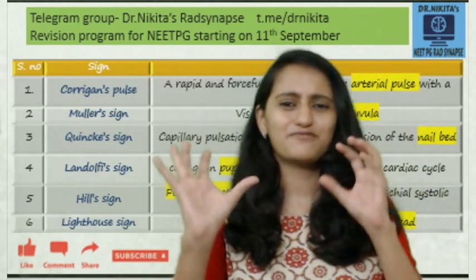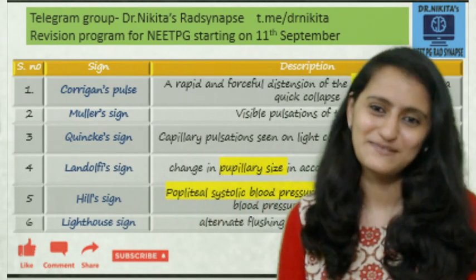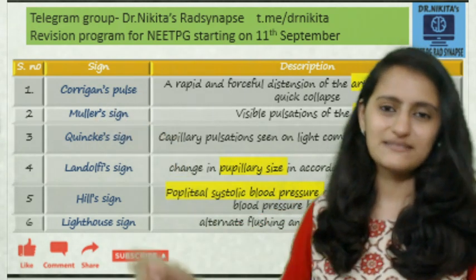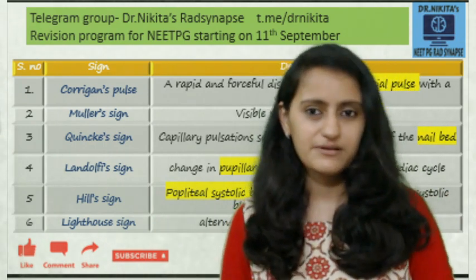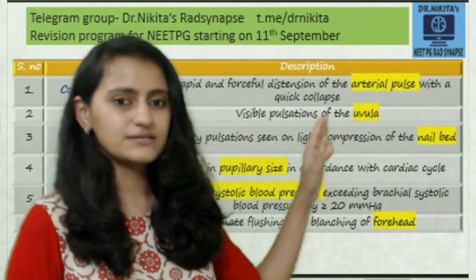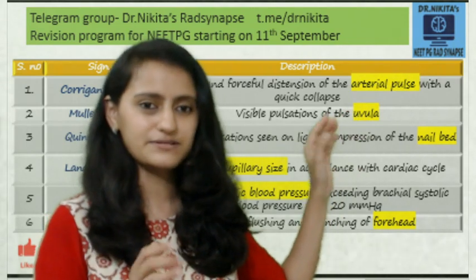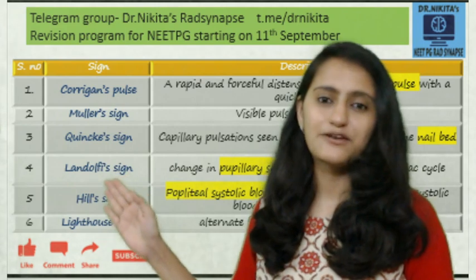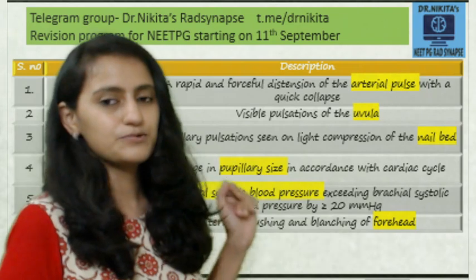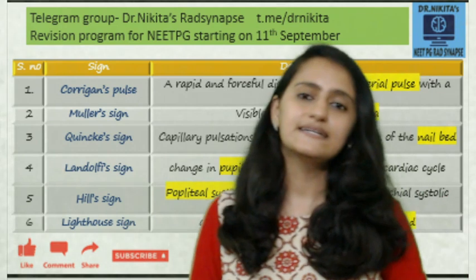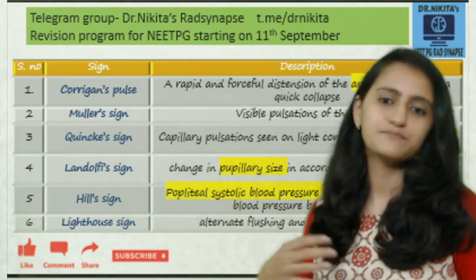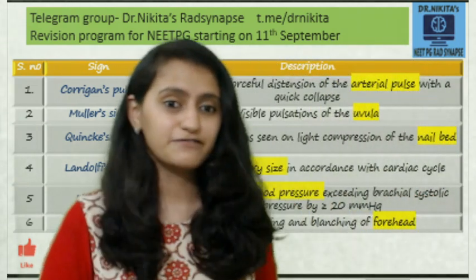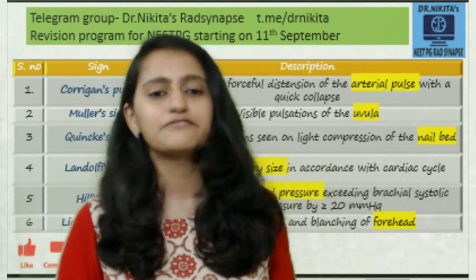That was part one — out of 12 to 15 signs, we have seen 6. Quick summary: Corrigan's sign is the dancing carotid; in the periphery, it is called Watson's water hammer pulse. Müller's sign is uvula pulsations — MU is Müller's. Quinky sign is nail bed pulsations — do it quickly, fingers, nail beds. Lendolfi sign is change in pupillary size — 'dol' is dot, pupil is a dot. Hill's sign — double-L means lower limb — popliteal artery pressure more than brachial by at least 20 mmHg systolic. Lighthouse sign is alternate flushing and paleness in the forehead.